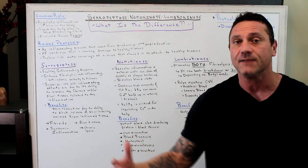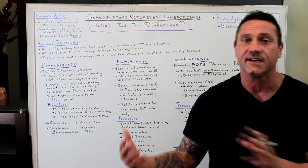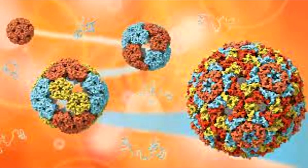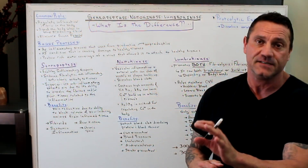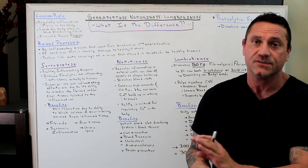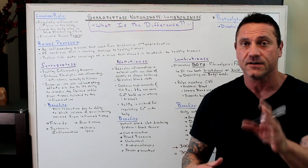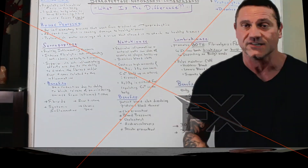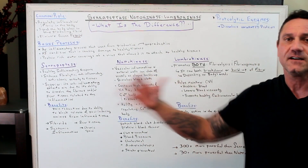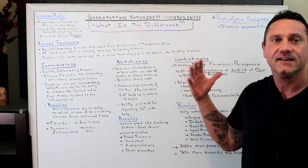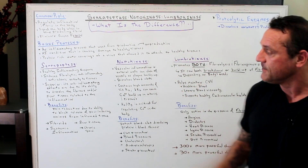Lyme disease is another example. When I was doing the research on lumbrokinase, if you have Lyme disease, do the research on lumbrokinase — it's phenomenal for Lyme disease and the dosage is a lot higher. I encourage you to do your own research. So what's the difference between serrapeptase, nattokinase, and lumbrokinase? Let's start off with serrapeptase.